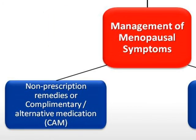There are many types of non-prescription herbal remedies. Some examples include isoflavone supplements, soya products, black cohosh, evening primrose oil, and ginkgo nut. Complementary approaches include acupuncture, aromatherapy, reflexology, and homeopathy.